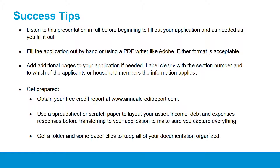Here are some tips for submitting a quality application. Listen to this presentation in full before beginning to fill out your application, and then consider listening to it in sections as you begin so you don't miss anything. You can fill out the application by hand or using a PDF writer like Adobe — we accept both as long as they are legible. If you run out of space in any section, you may add additional pages, clearly labeled with the section number and which applicant or household member the information applies to. If you are not completely sure about a particular section, leave it blank and a Habitat Chicago staff member will assist you during your consultation.